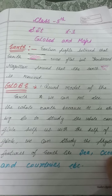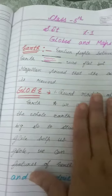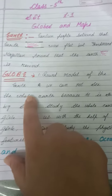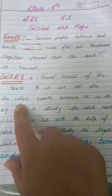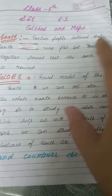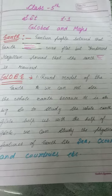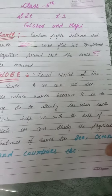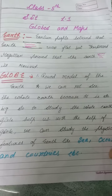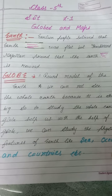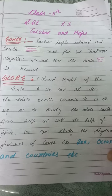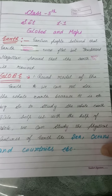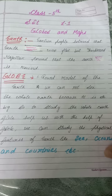The globe is the round model of the earth. We can't see the whole earth directly, but with the help of a globe, we can study the physical features of earth like seas, oceans, mountains, countries, and more.